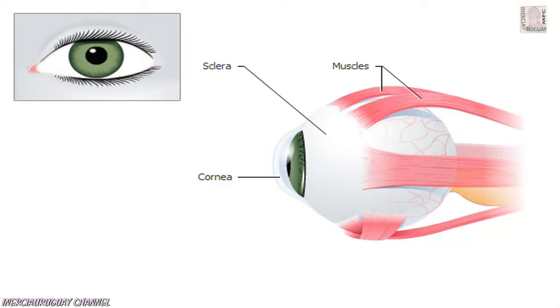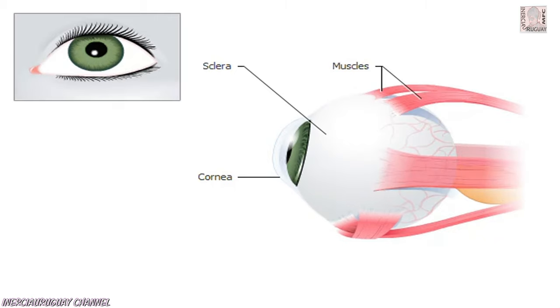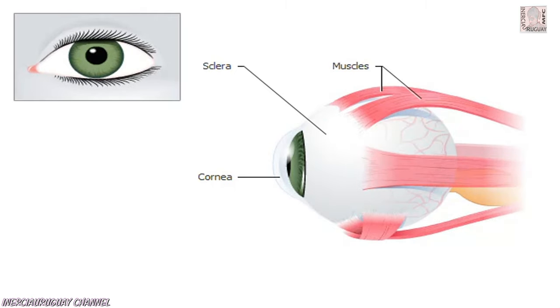The front of our eye is covered by a transparent membrane, the cornea. The sclera is the white outer covering. Movement of the eye is controlled by small muscles attached to it.